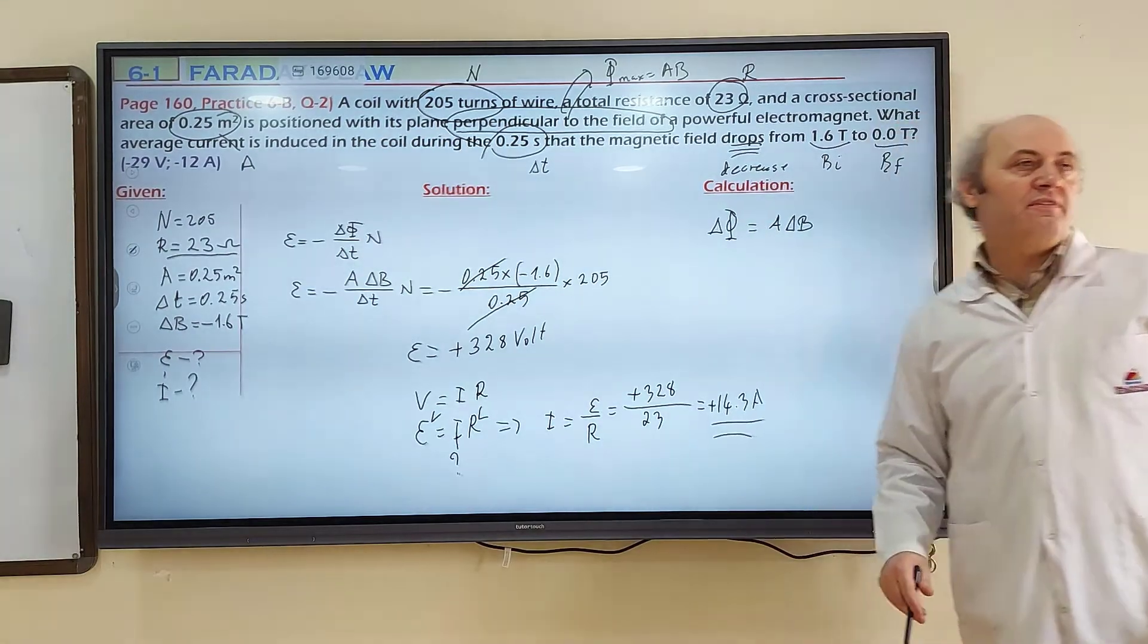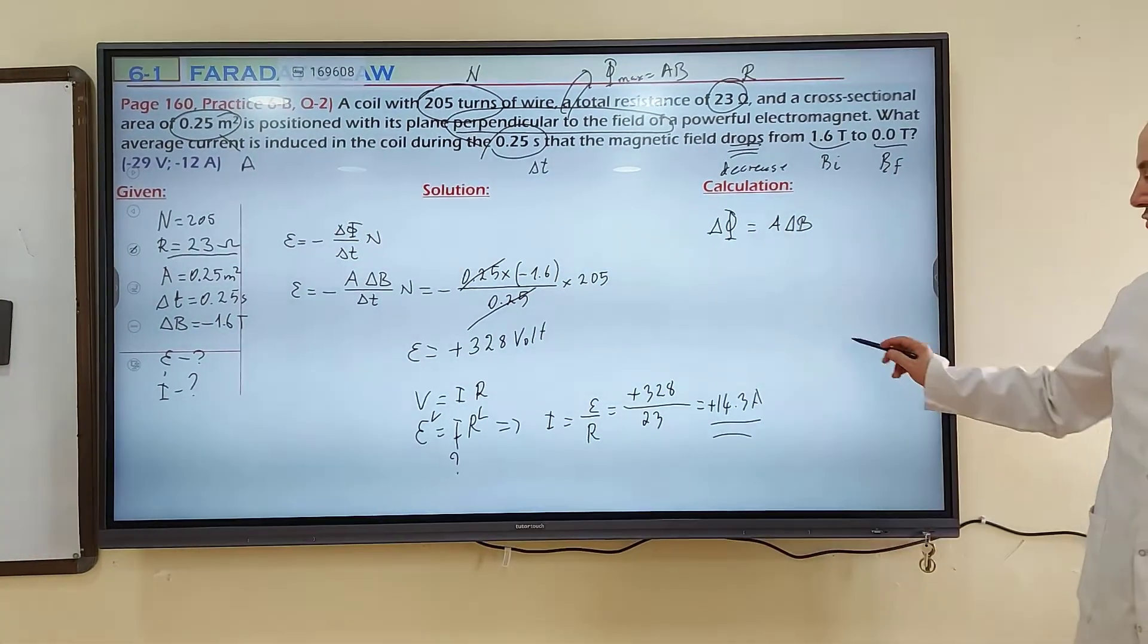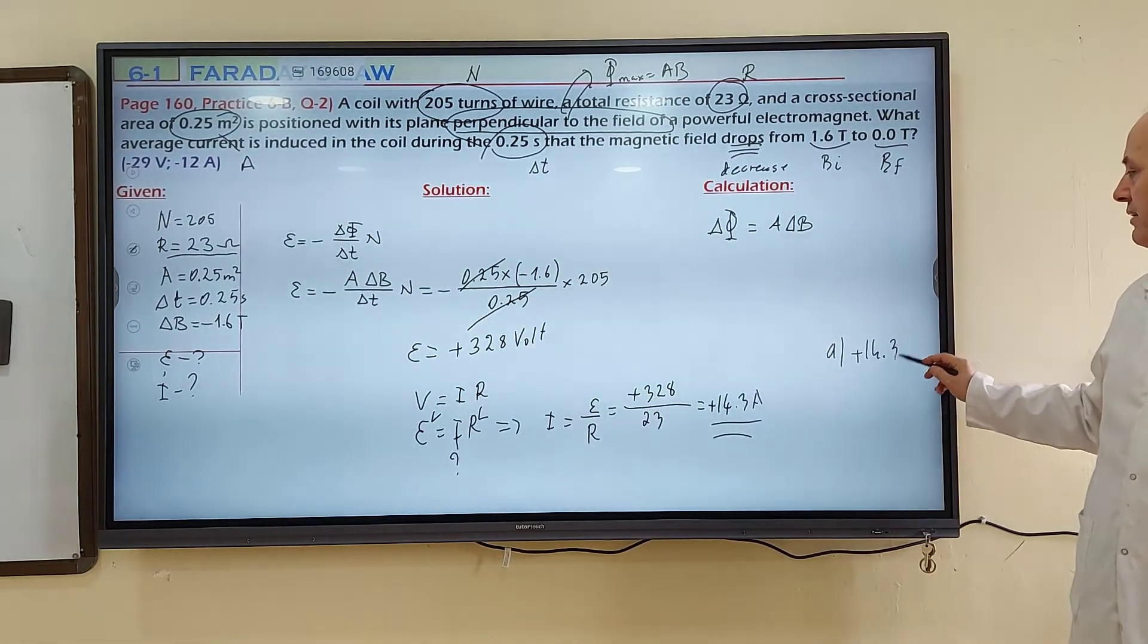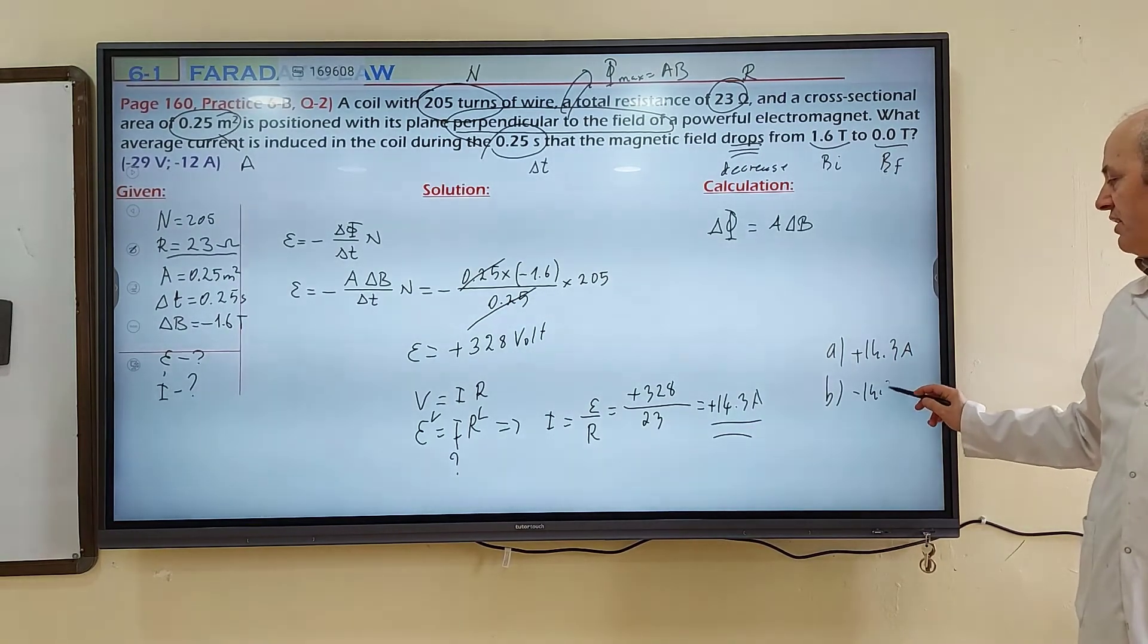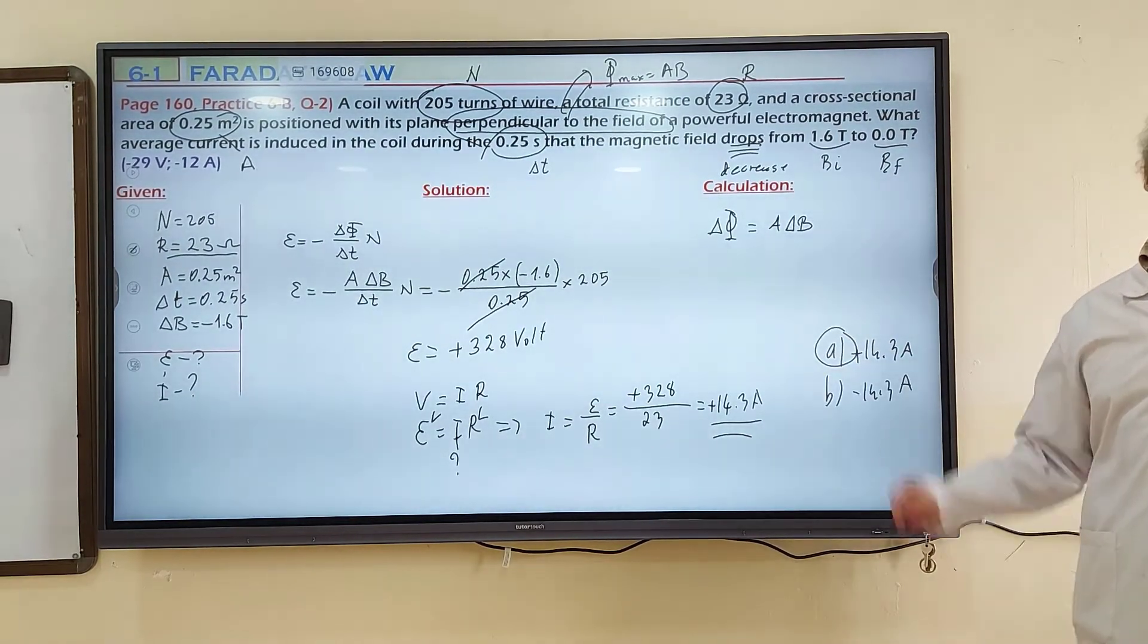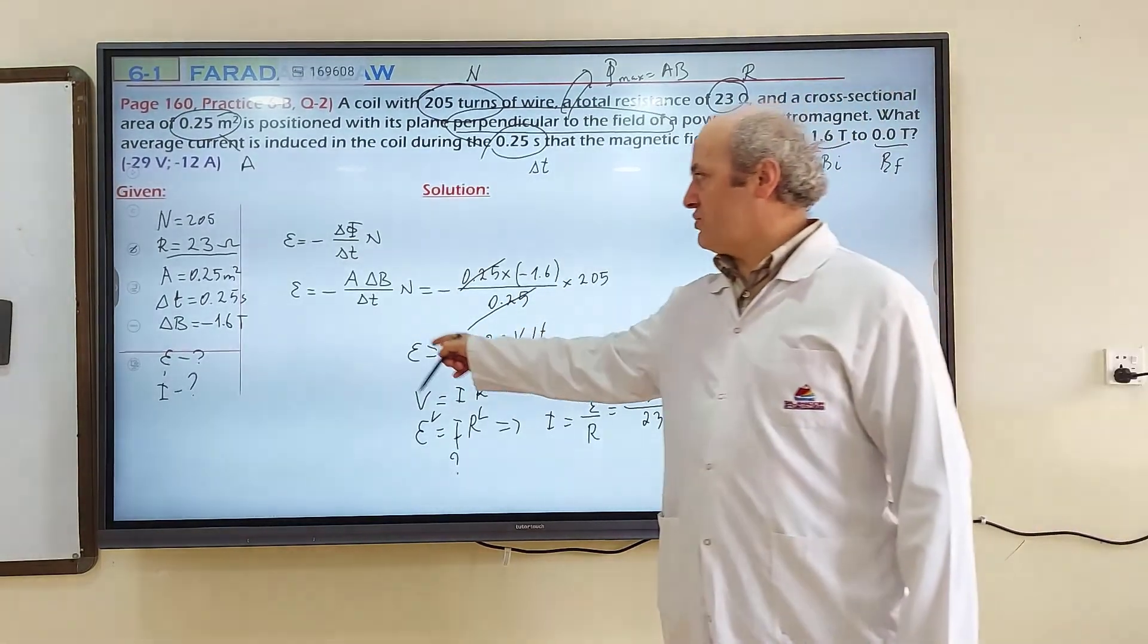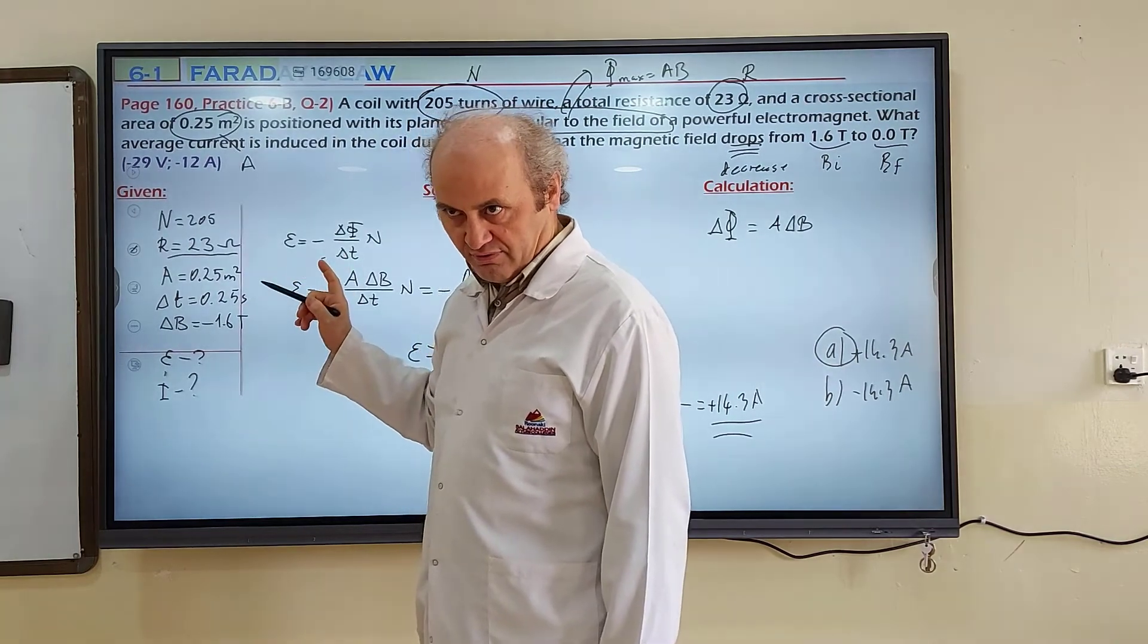In your choices, they will give answers as both positive and negative. If choice A is positive 14.3 amperes, choice B will be negative 14.3 amperes. Which one is the correct answer? A. You should be careful about the sign. What you calculate is the correct answer. Never forget the negative in the equation, and then because there are two negatives, this negative and that can multiply and change to positive.